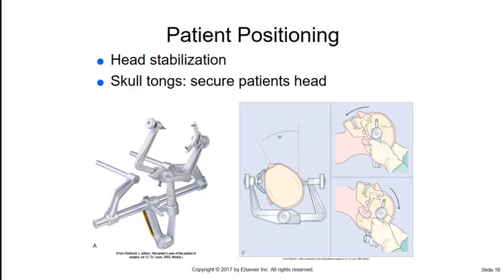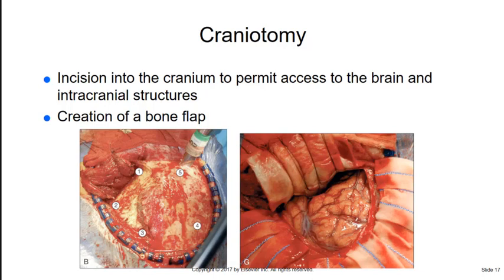A craniotomy may be required to provide access for treatment of a variety of intracranial conditions, including aneurysm, tumor, or hematoma. The patient is placed in the supine, prone, or sitting position. After the incision, the scalp bleeds extensively, so Raney clips are applied. A section of bone called the bone flap is then removed; the size depends on the tumor size or the access needed to the brain.